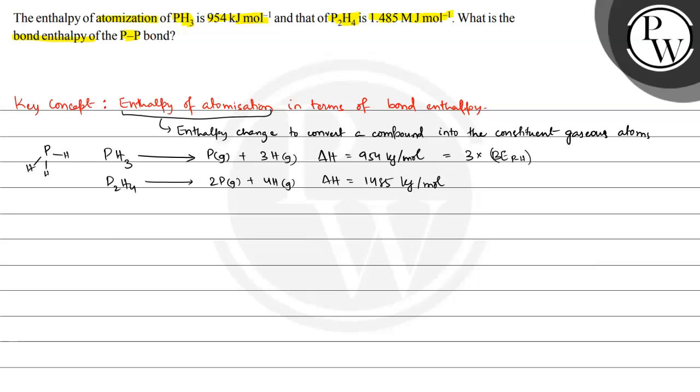And P2H4 structure is like this: P single bond P and 2 phosphorous, 2 hydrogens like this. Here 4 P-H bonds and 1 P-P bond break. This is equal to 4 multiplied by bond energy of P-H plus bond energy of P single bond P.